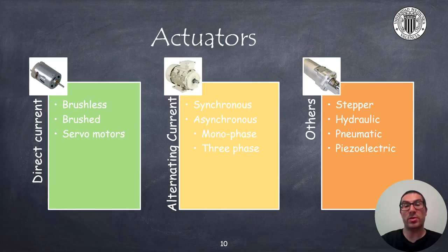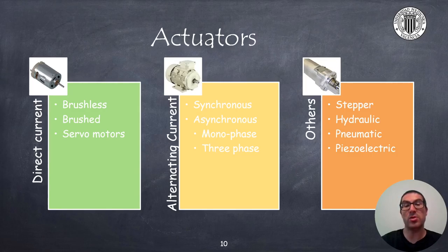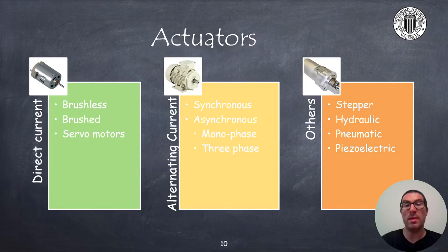Most robot actuators are direct current or alternating current motors. Depending on the size, speed, torque, and power features required in each application, we can choose between one type of motor or another. In DC motors, we can find brushed motors, valued for the ease in changing their direction and speed, but also brushless motors like the ones used in many drones. We can also find servo motors, which are motors with a position control system. The vast majority of AC motors used in robotics are asynchronous motors that can be used in single-phase or three-phase mode depending on the power demands. In addition, there are other types of motors such as stepper motors, hydraulics, pneumatic, and piezoelectric motors, etc.